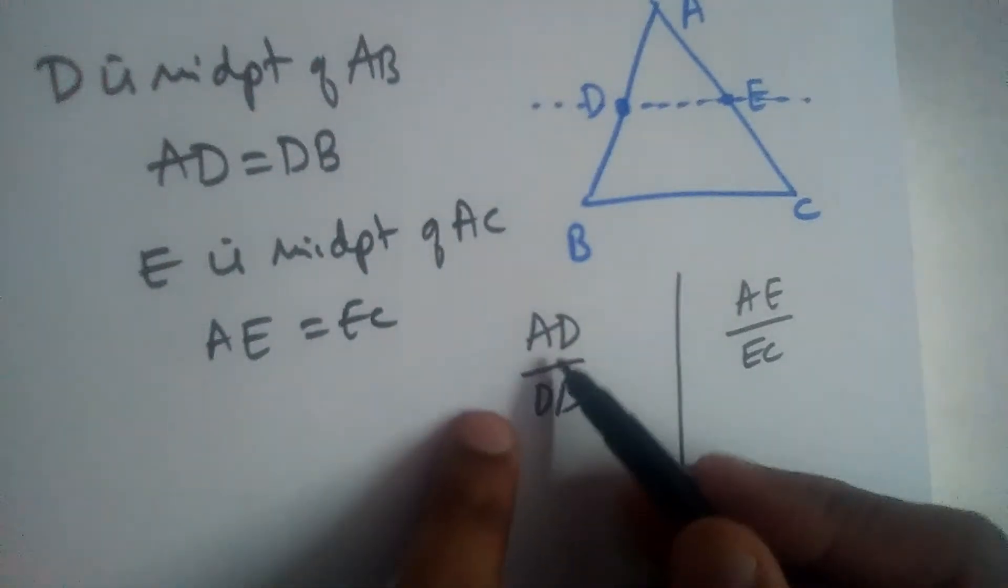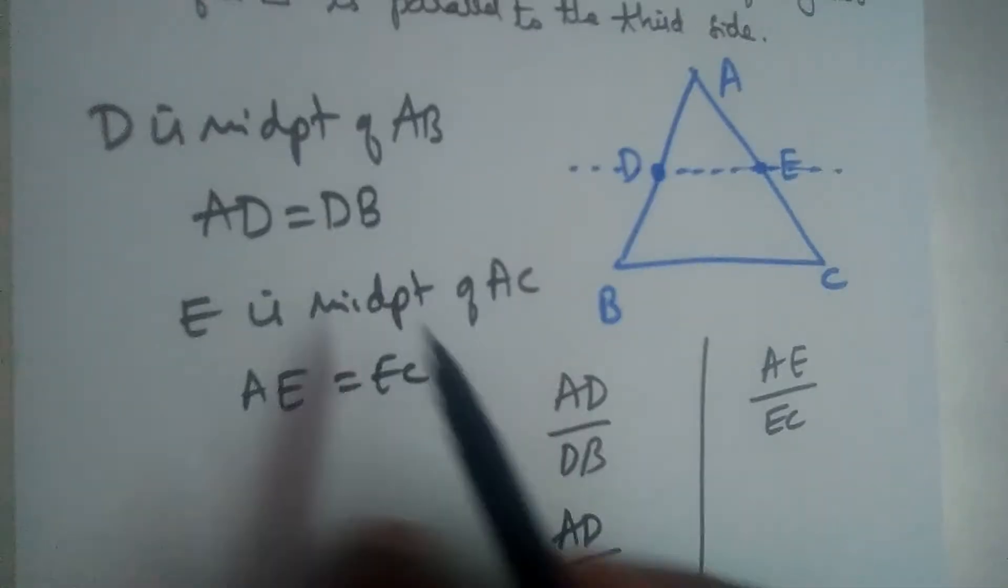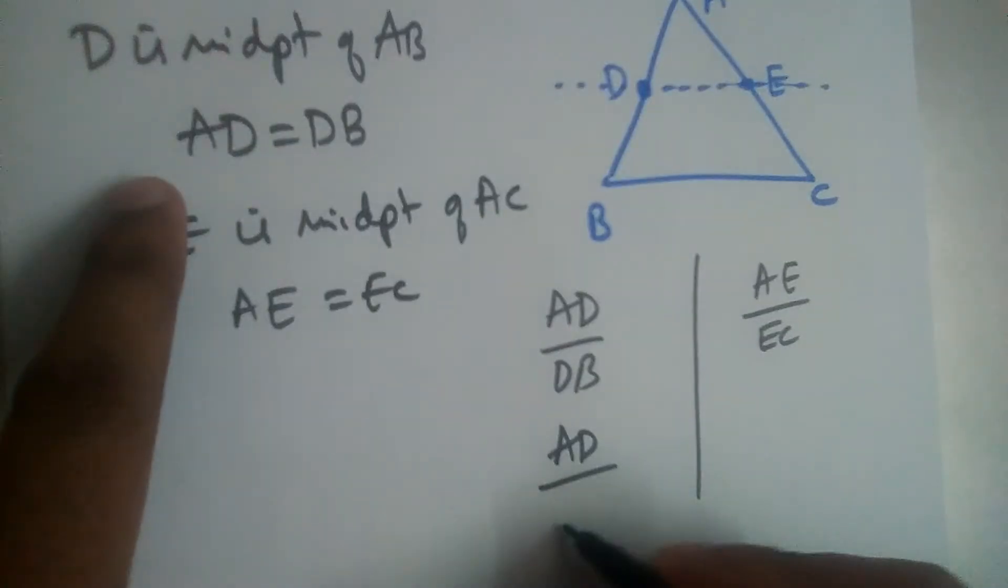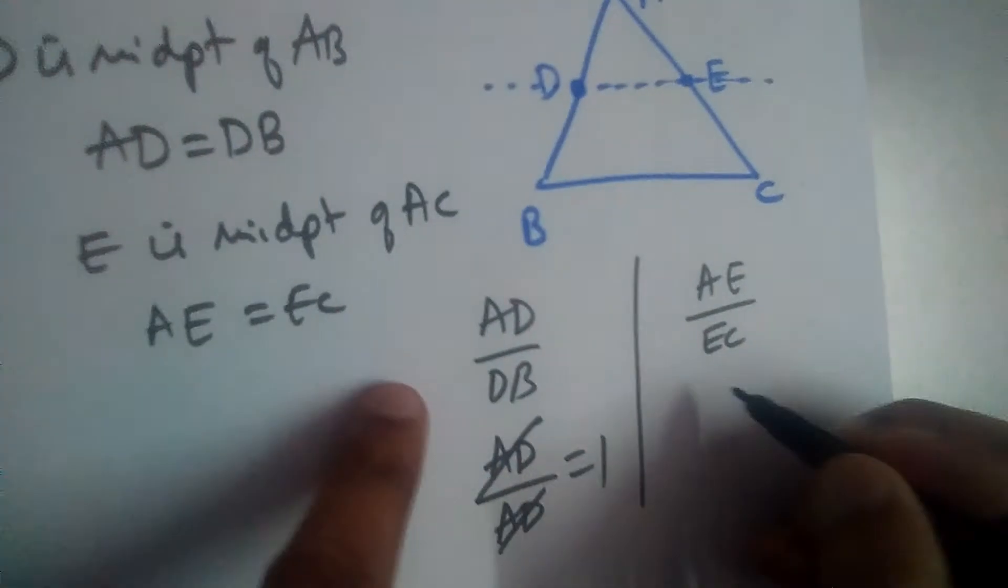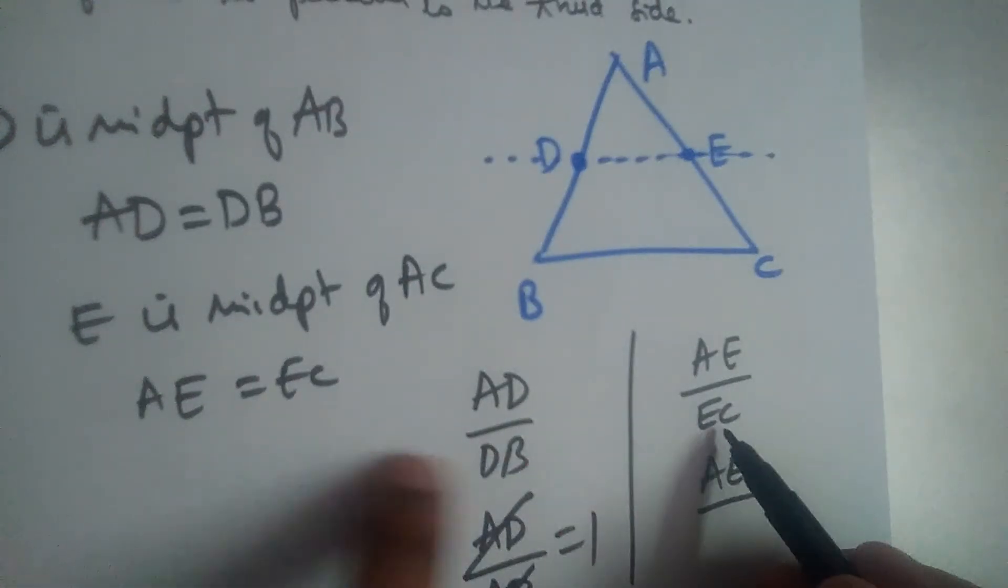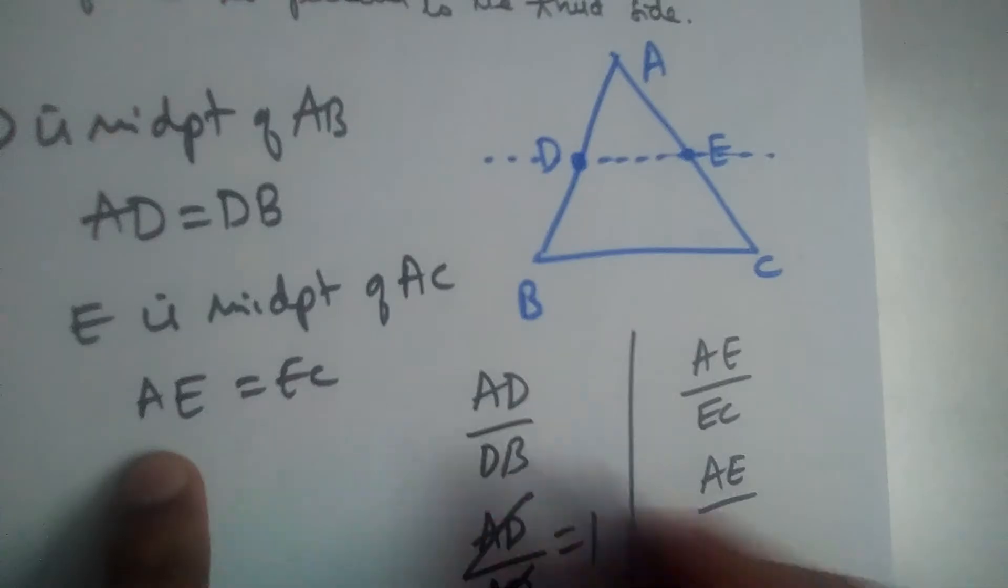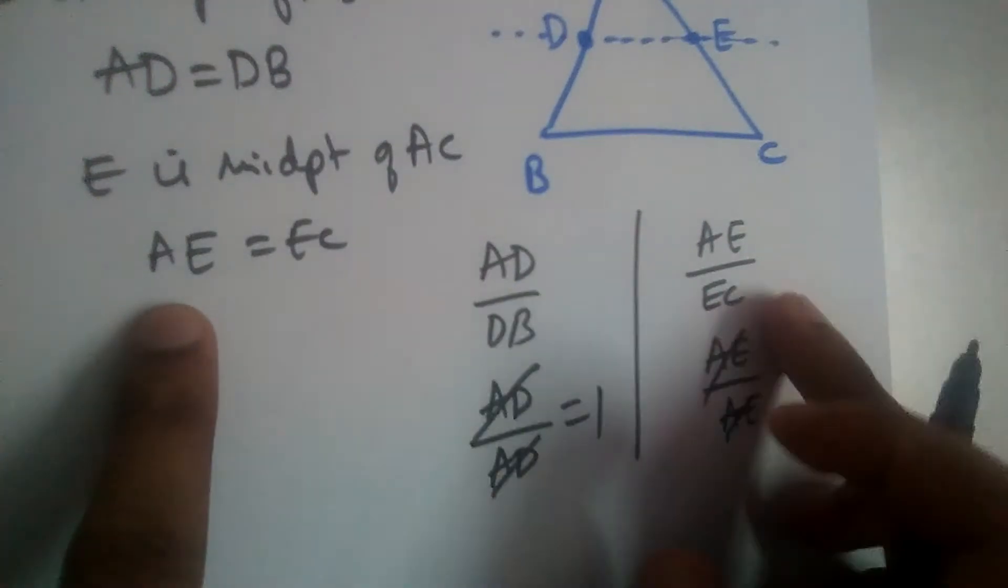AD divided by DB. This is AD divided by DB, which is also equal to AD, right? So let us write AD here. So AD over AD will get canceled. It will be equal to 1. And we have AE divided by EC. In place of EC we are writing AE again, so this will also be equal to 1.